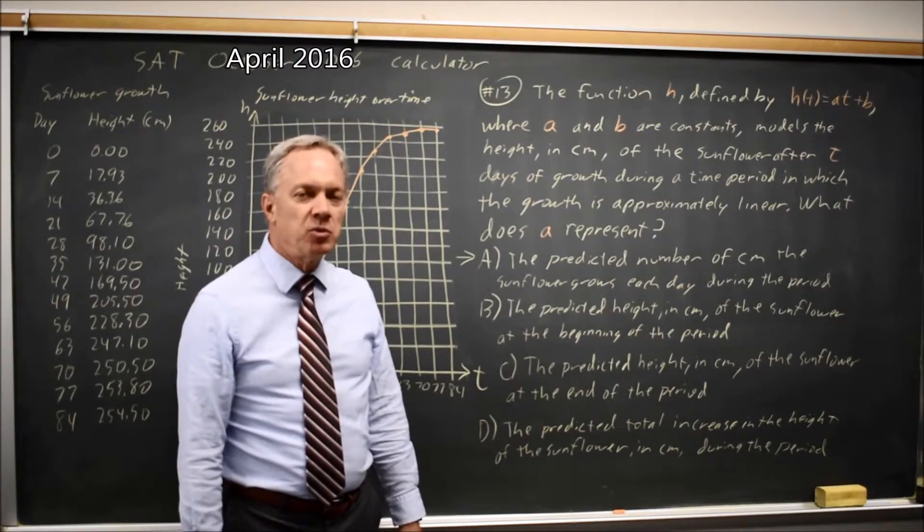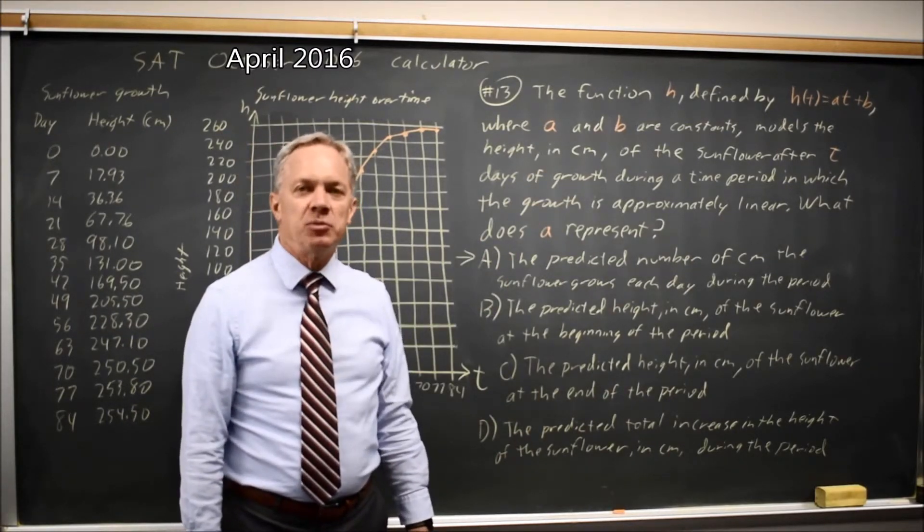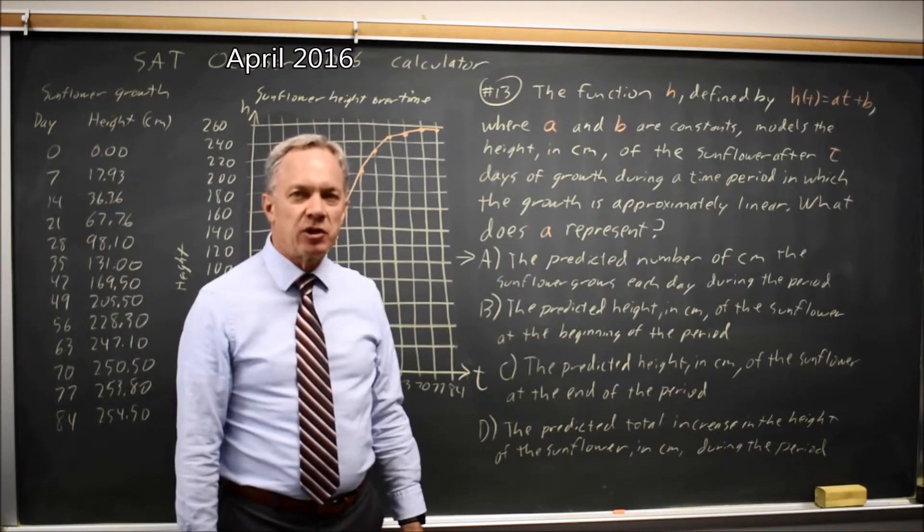Choice a describes the slope where lowercase a is the slope in h of t equals at plus b. So a is the correct answer.